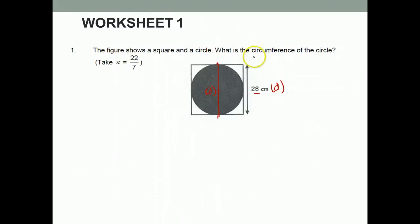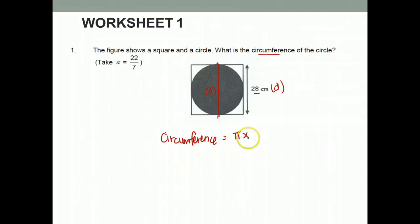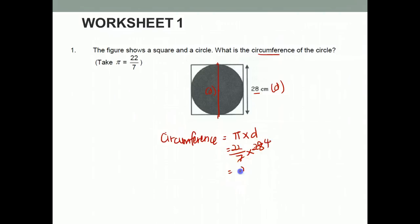So how to find the circumference? Circumference is pi times d — pi times diameter. Our pi is 22 over 7. My diameter is 28. Therefore the circumference of the circle is 88 cm.